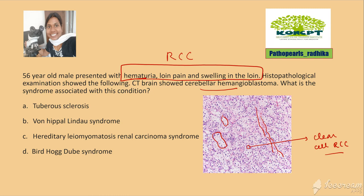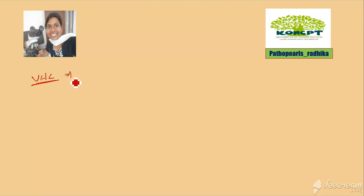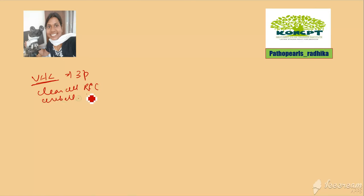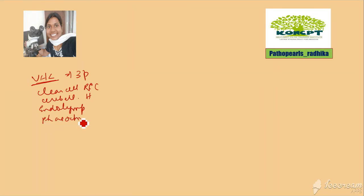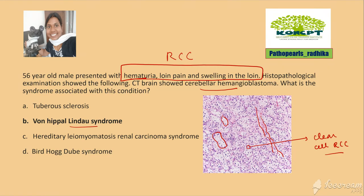The answer is VHL syndrome. The gene for VHL is located on chromosome 3p. VHL syndrome can present with clear cell RCC, cerebellar hemangioblastoma, tumors of the inner ear such as endolymphatic sac tumors, and pheochromocytoma. All these can be associated with VHL syndrome.